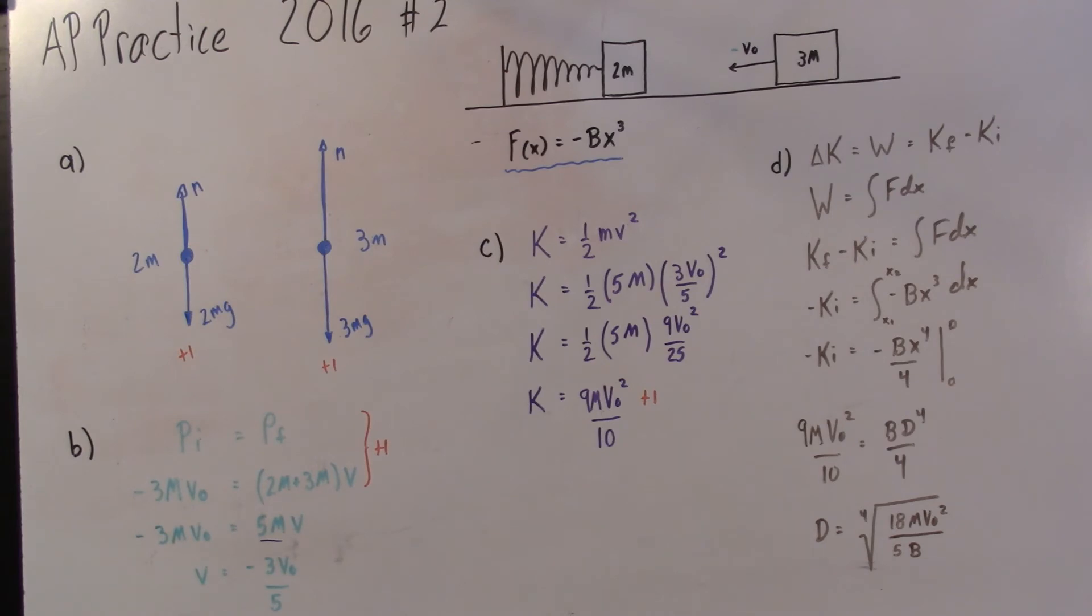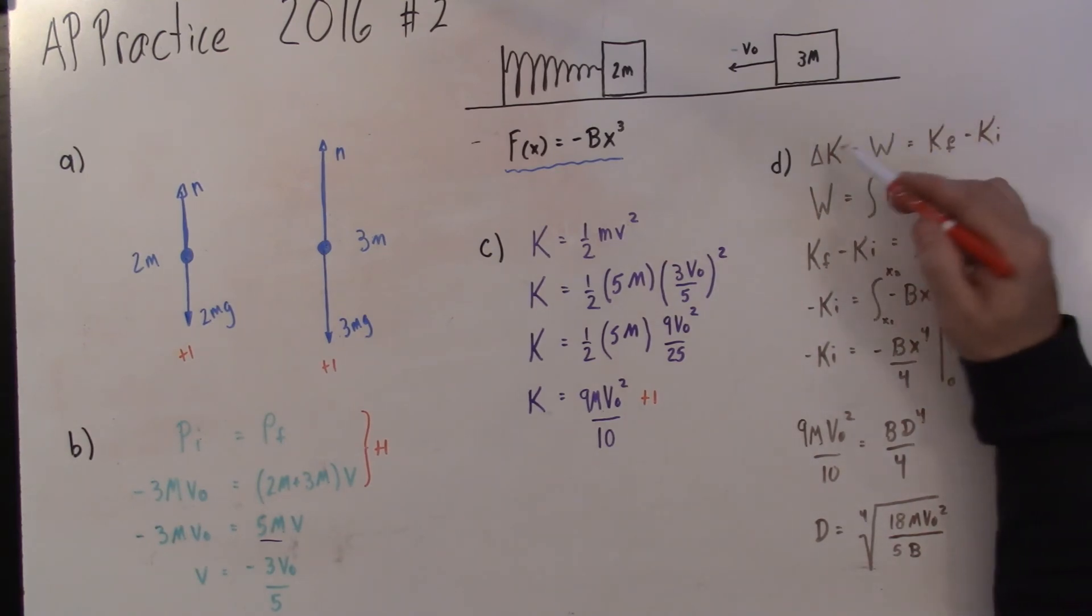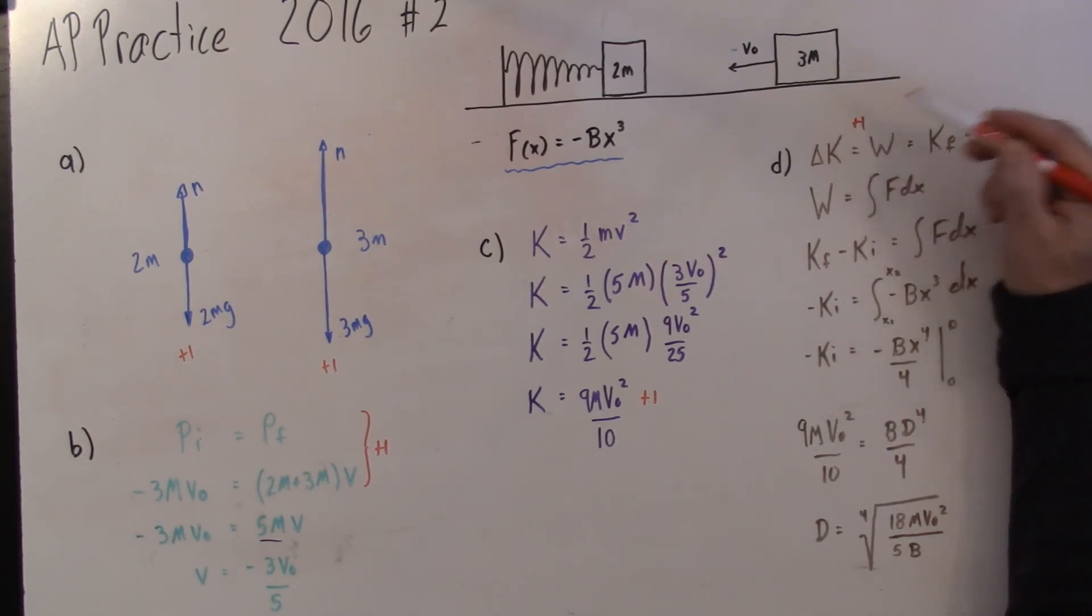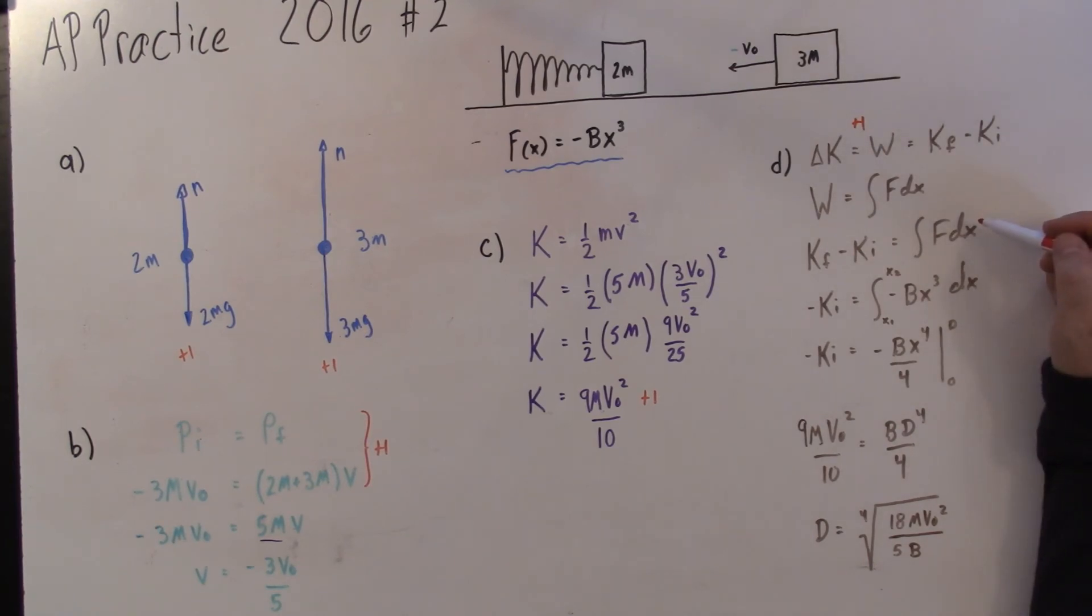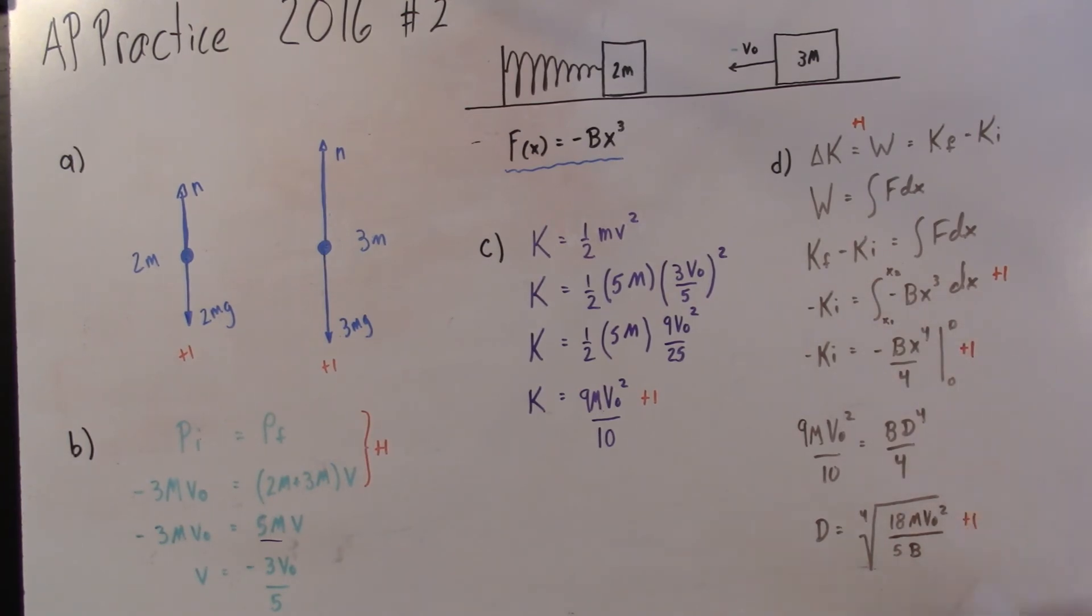For the correct expression of conservation of energy, if you have this, the change of kinetic energy equals the work, that's a point. For attempting to take the anti-derivative, that's a point. For using the correct limits from 0 to d, that's a point. You could have just plugged in d here. And if you got the correct answer, that's another point.